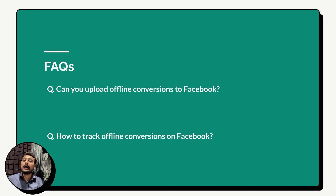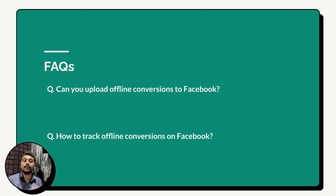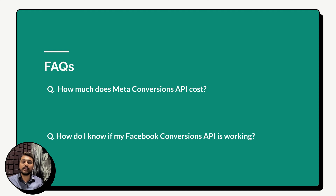Next question: how do you track offline conversions on Facebook? Until now, Facebook used a separate Offline Conversions API to send offline events. However, with the new Graph API version 17, it is no longer possible to leverage the old Offline Conversions API because it will not support offline events anymore. Therefore, you have only one option: use the Conversions API to sync your offline events to Meta along with your online events.